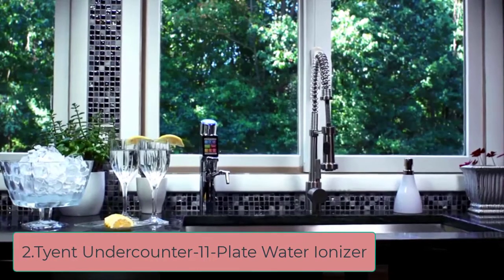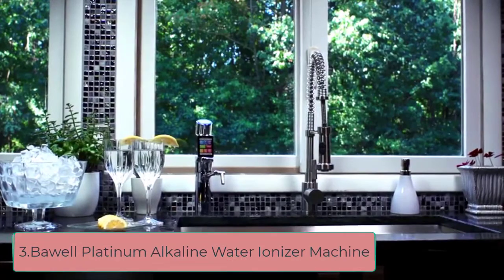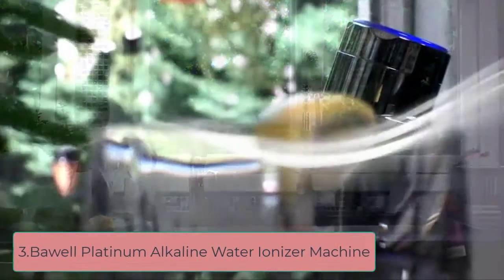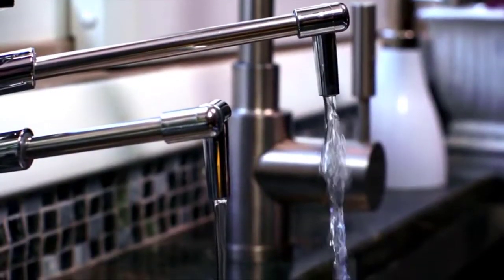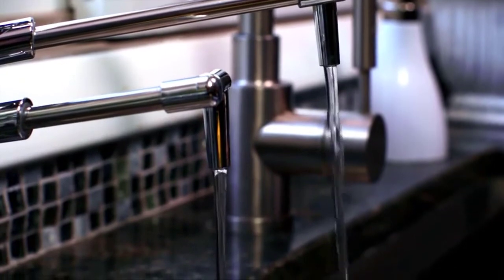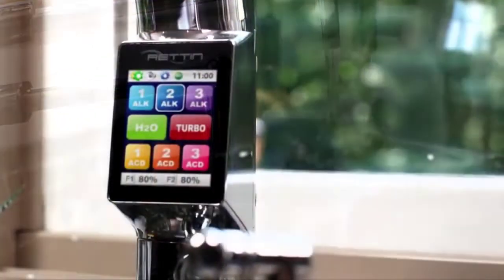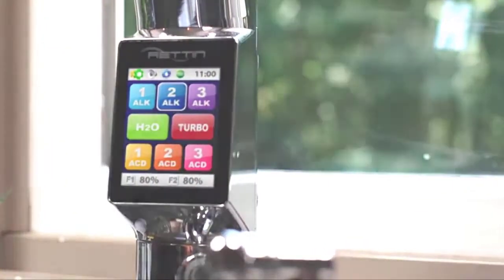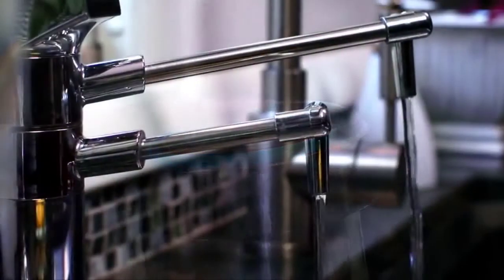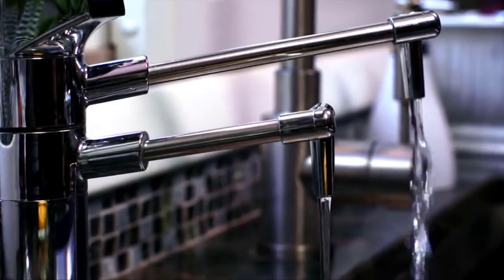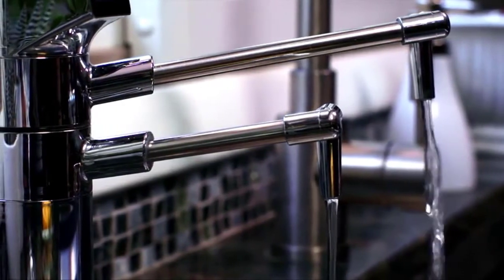At number two, Tyent Under Counter 11 Plate Water Ionizer. Living in the future is no longer a thing of the past with this Tyent water ionizer. This under-the-counter water ionizer boasts a sleek design and features a touchscreen that makes it easier than ever to get the water that you want with no bells and whistles. This water ionizer provides four alkaline, three acidic, one turbo for both alkaline and acidic output, and one neutral preset.